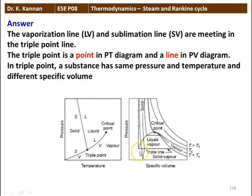If you look here, the pressure and temperature are constant along the triple point line but the specific volume — they are different.